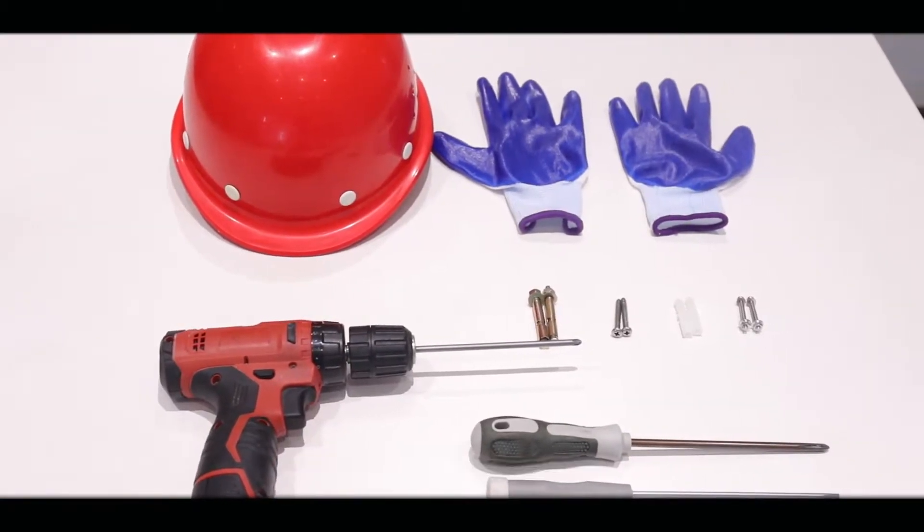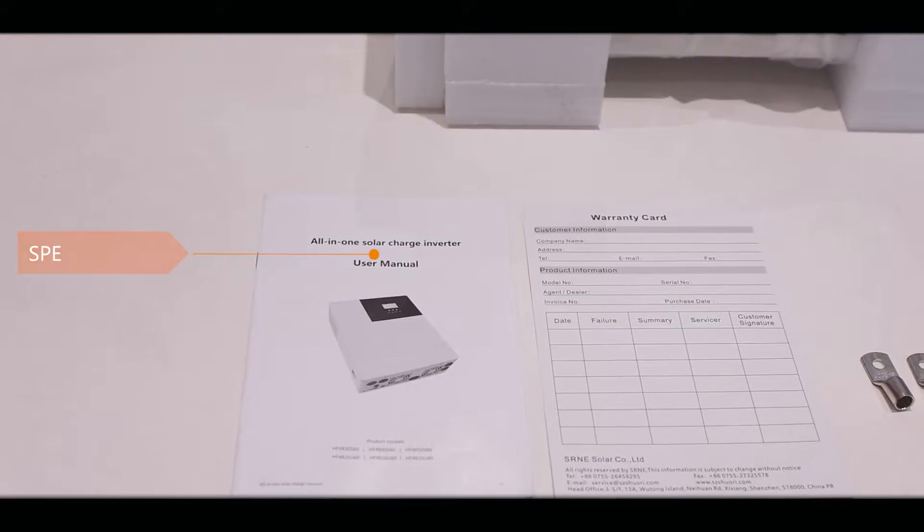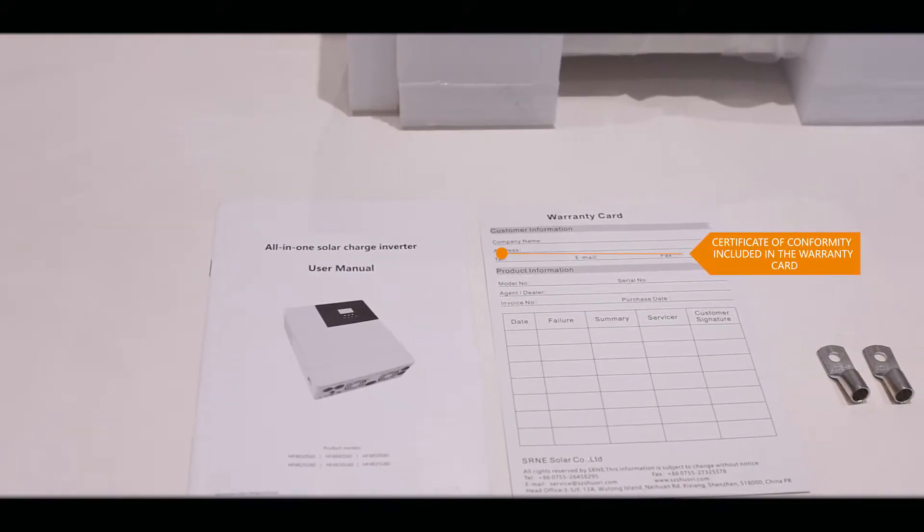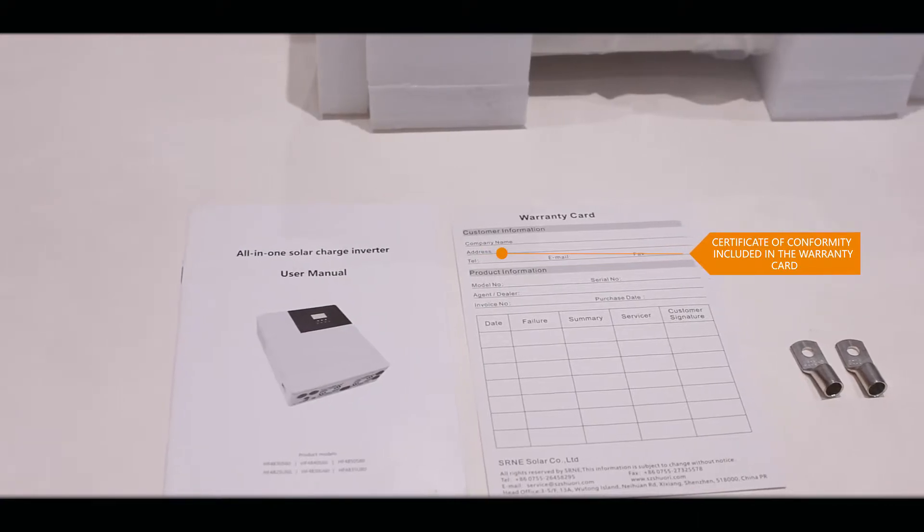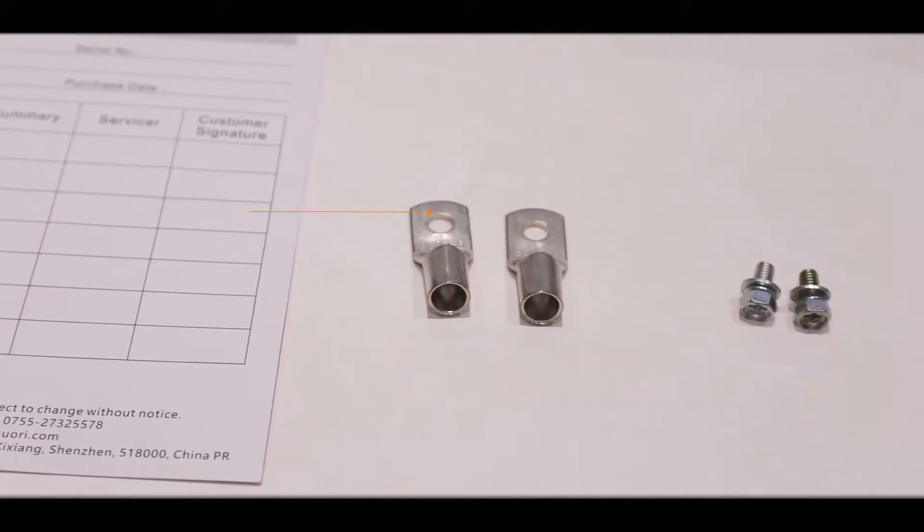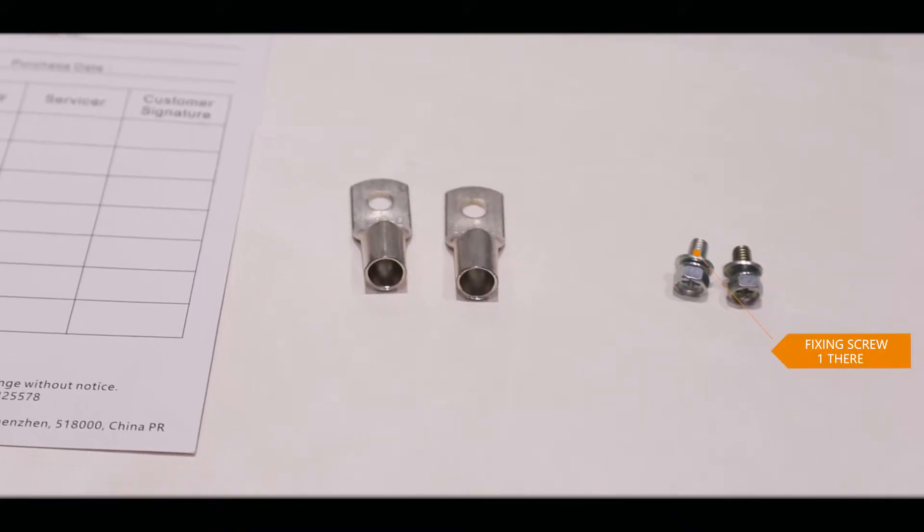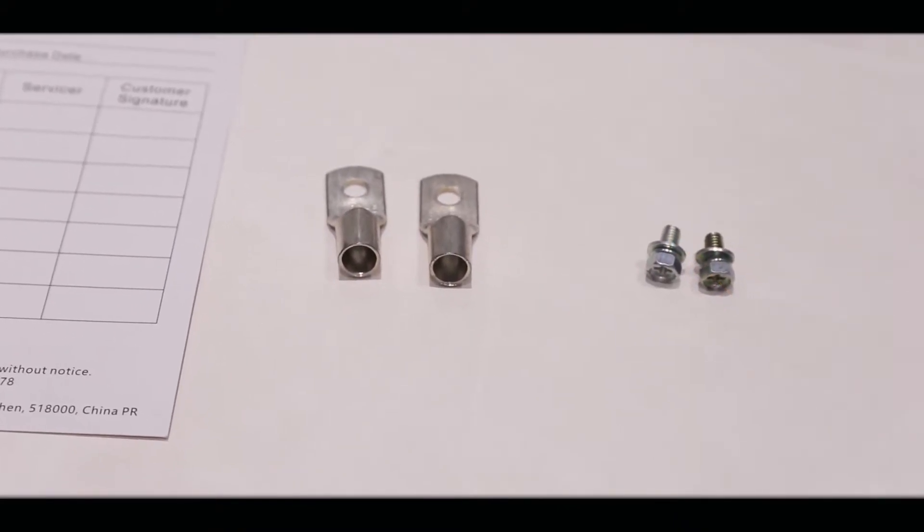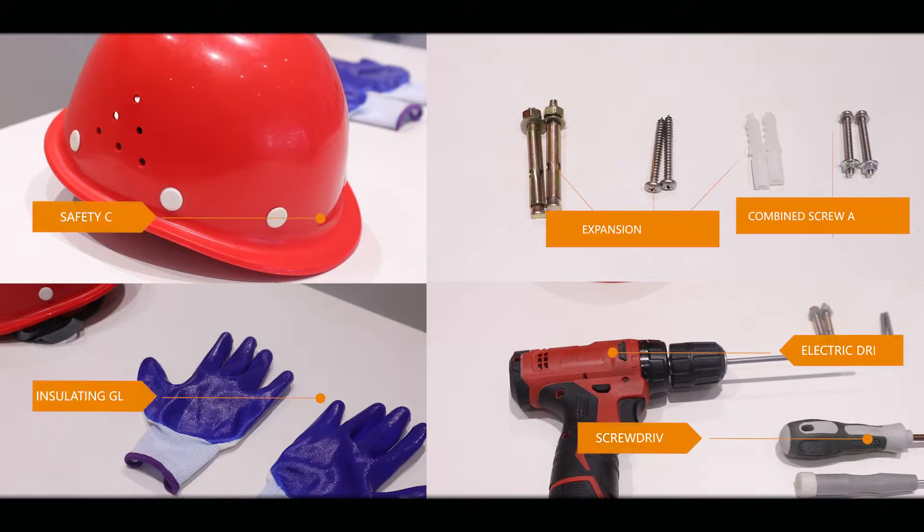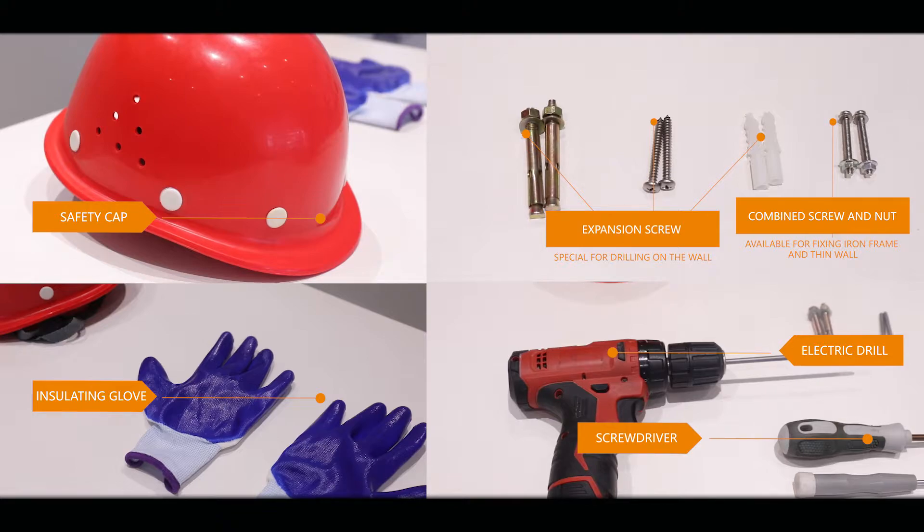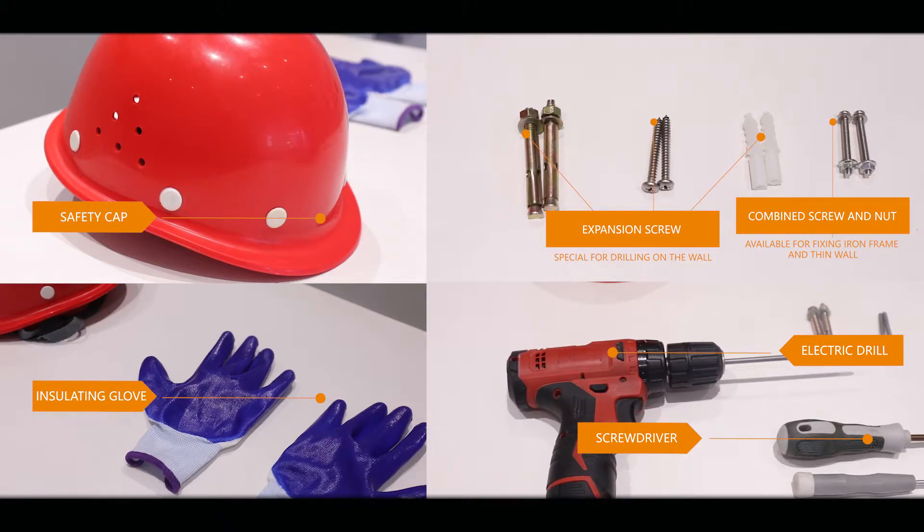Check the accessories, specification, certificate of conformity included in the warranty card, battery wiring terminal, fixing screw one thereof, safety cap, insulating glove, expansion crew, combined screw and nut, electric drill, screwdriver.